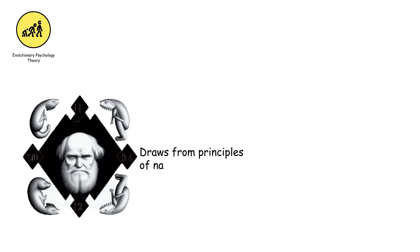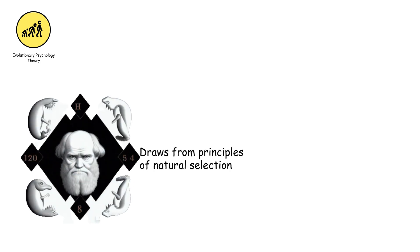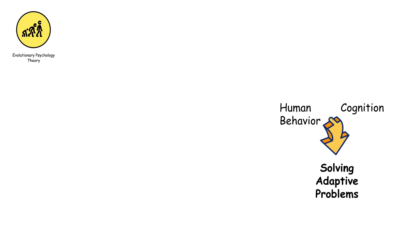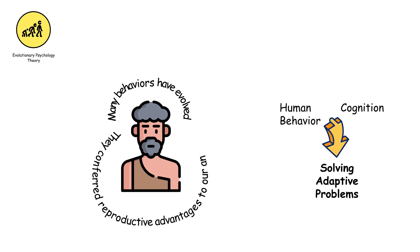Evolutionary psychology theory, drawing from principles of natural selection, explores how human behavior and cognition have evolved to solve adaptive problems. It suggests that many behaviors have evolved because they conferred reproductive advantages to our ancestors.